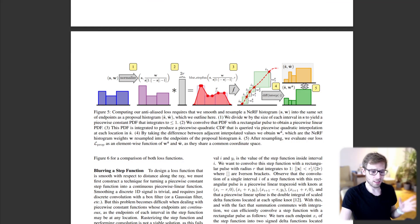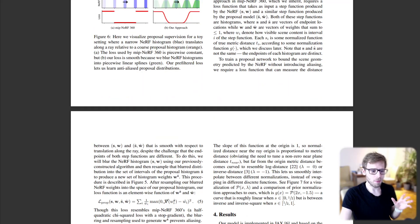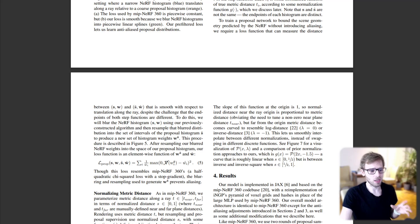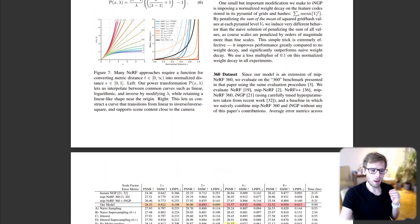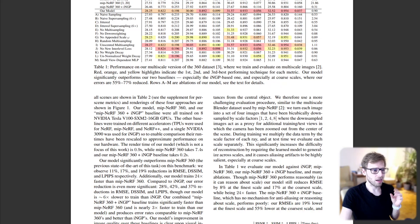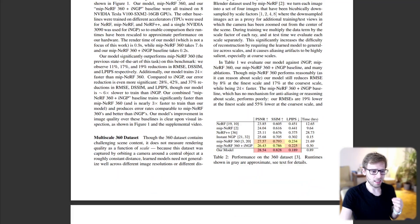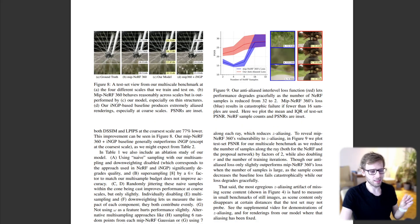Zip-NeRF also addresses the issues of XY-aliasing and Z-aliasing. A naive baseline combining MIP-NeRF 360 and Instant NGP results in aliasing as the camera moves laterally. However, Zip-NeRF produces pre-filtered renderings that do not flicker or shimmer.